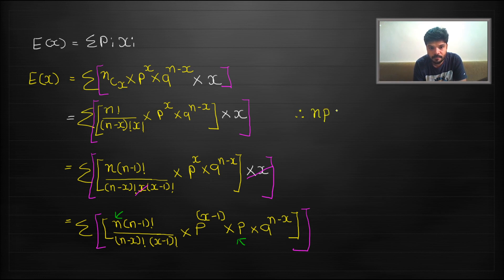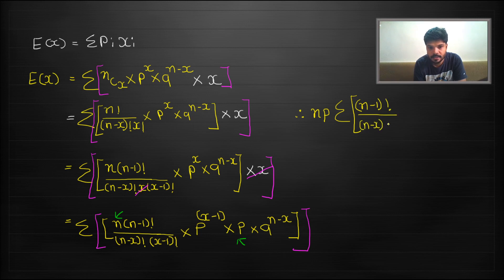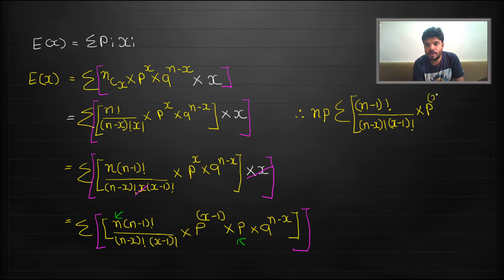After taking n·p outside, we have: n·p times sigma of (n−1)! divided by (n−x)!·(x−1)! times p^(x−1) · q^(n−x). This is what we have now, and the next step involves a clever substitution.